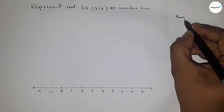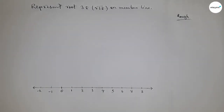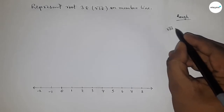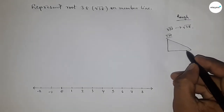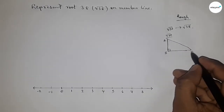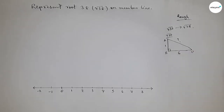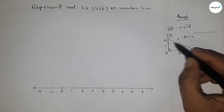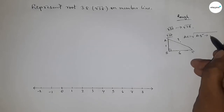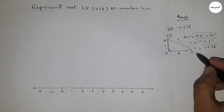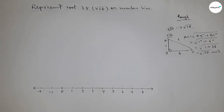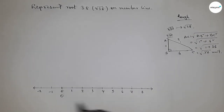Now let's discuss the calculation. First we represent root 37, then root 38. For root 37: if there is a right angle triangle ABC with base 6 and height 1, then by Pythagoras theorem, hypotenuse equals root over (height squared plus base squared), which is root of (1 squared plus 6 squared), equal to root of (1 + 36), so the hypotenuse is root 37 units.